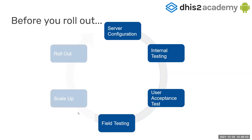I'm going to focus first on the phases of configuration and testing that you do before scale-up. The main message we want to send is that they are iterative — they go in cycles. All the phases — internal testing, user acceptance, field testing — will keep on informing and fine-tuning your configuration. You are going to keep on making changes across these phases before scaling up.